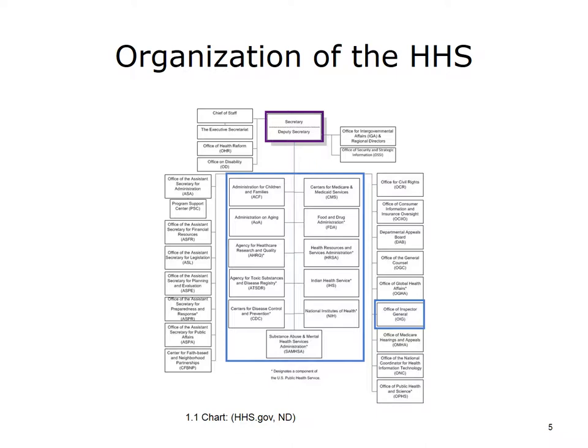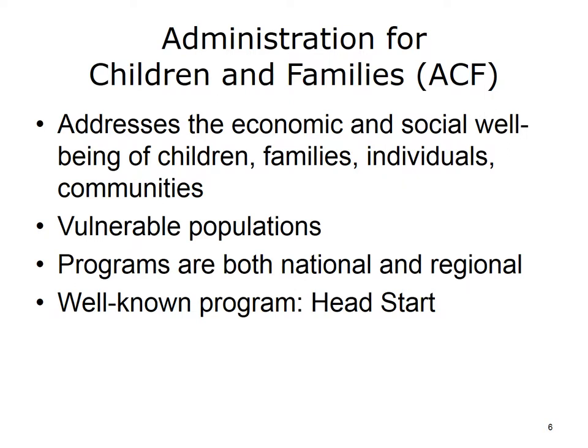Three of the HHS divisions are considered human services agencies: the Administration for Children and Families, the Administration on Aging, and the Centers for Medicare and Medicaid Services. The other eight divisions are part of the U.S. Public Health Service. Overall, the HHS runs more than 300 healthcare programs. The Administration for Children and Families, or ACF, operates federal programs that encourage economic independence, social well-being, and quality of life. Although this agency targets children and families, it also addresses individuals and entire communities.